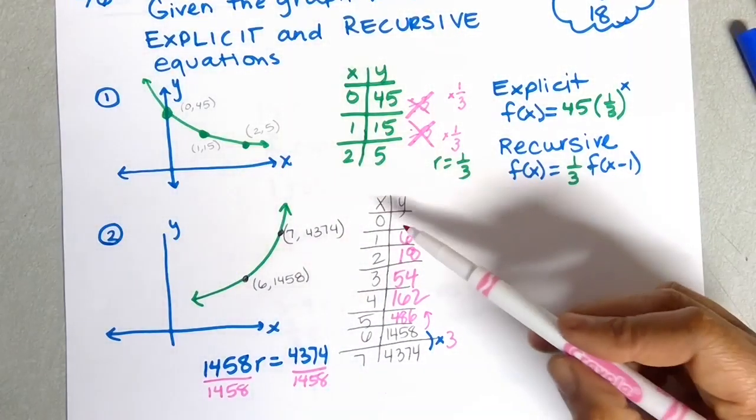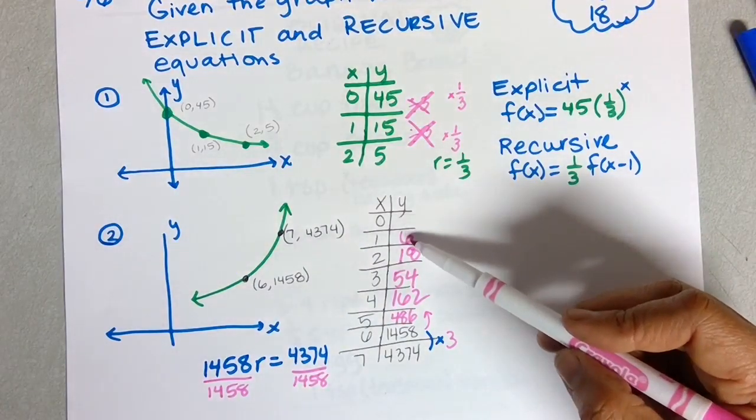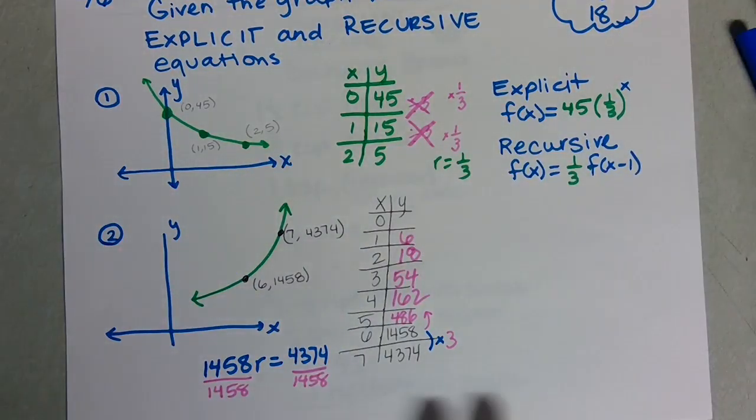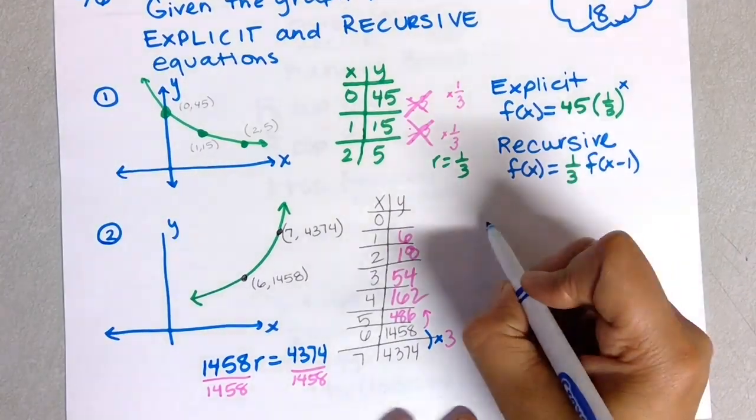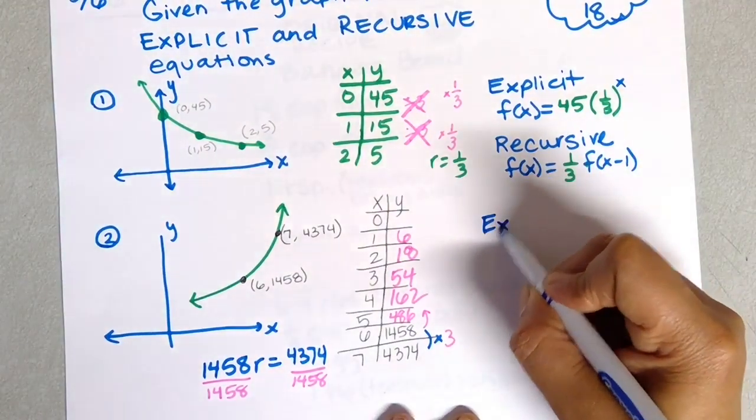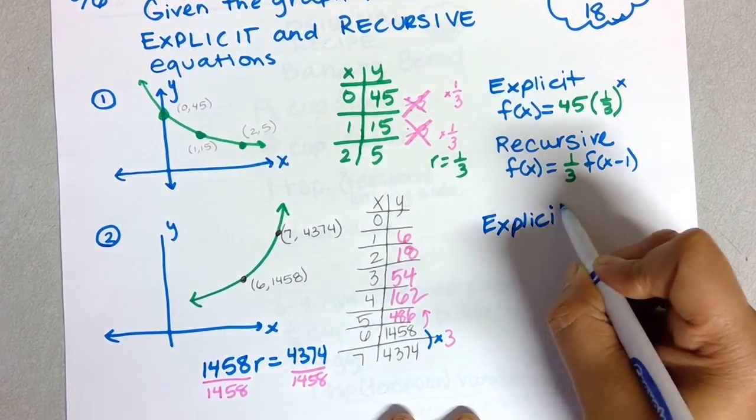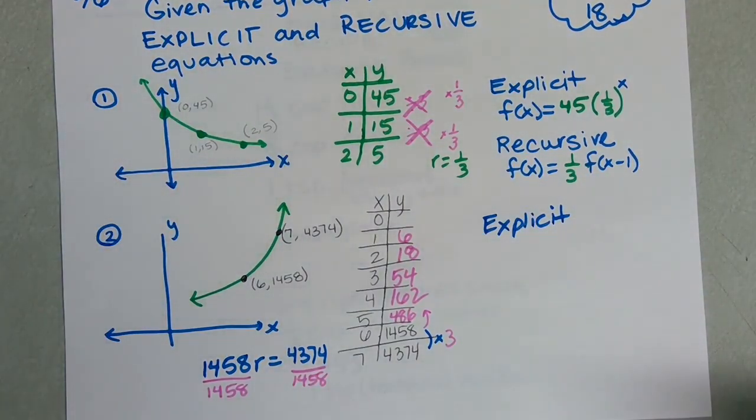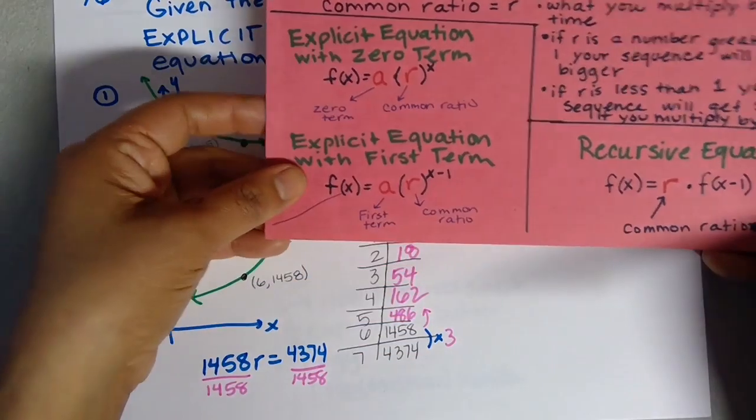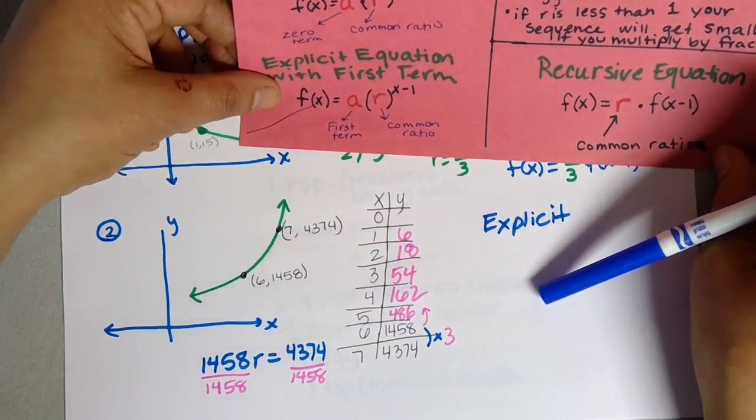Now I could go to my zero term, but I'm just going to go to my first term. I'm going to write the explicit equation—I have all the information I need. For the explicit using the first term, it's going to be this formula right here.